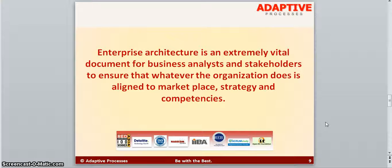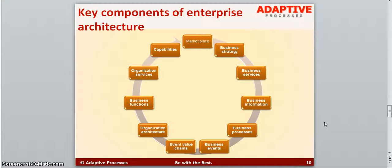Enterprise architecture should give you an idea about an organization at a very succinct level — you read about 20 pages and get to understand quite a lot. It serves as a guide for deciding what to do or not to do. Typical elements should include marketplace, business strategy, business services, business information, business processes, event value chain, organization structure, business functions, services, and capabilities — a whole lot of things.